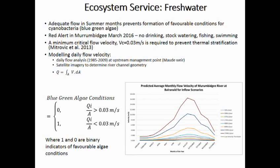Our freshwater ecosystem service — blue-green algae — is quite a simple one. For blue-green algae conditions to be prevented, there needs to be a minimum flow velocity. We've borrowed this from the Darling River: the minimum flow velocity is 0.03 meters per second. Using upstream historic daily flow data, we develop a model to express how flow velocity would be per month and identify critical months. Blue-green algae conditions are expressed as binary indicators — one when the minimum flow condition is not met and zero when it is.